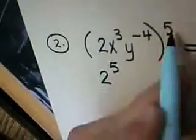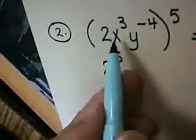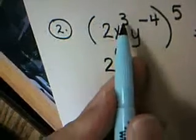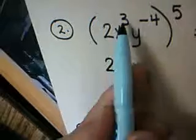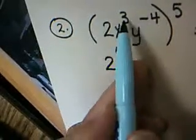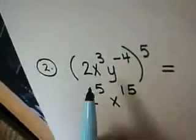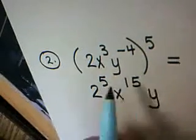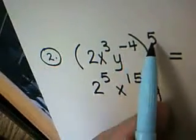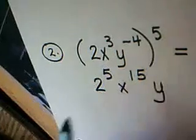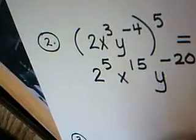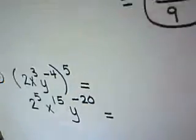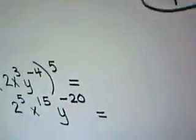So 2 to the fifth becomes 2 to the fifth. When I have a variable to a power and there's another power on the outside, I leave the variable base the same and multiply the powers. Negative 3 times 5 gives me 15. I do the same with the y. I leave the y the same. Negative 4 times 5 is going to give me negative 20. Now, to finish this problem and get your final answer, what we're going to see is this.